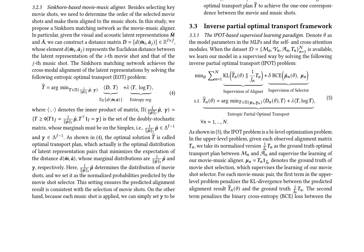Finally, the authors introduce an inverse partial optimal transport framework for supervised learning, which aims to minimize the KL divergence between the predicted alignment result and the ground truth optimal transport plan, as well as the binary cross-entropy loss between the predicted movie shot selection probabilities and the ground truth.